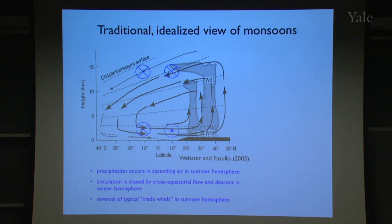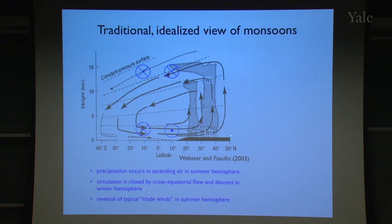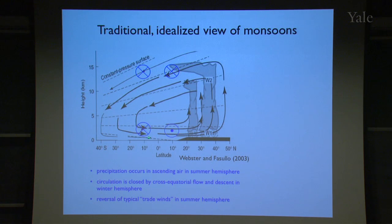That precipitation distribution is a result of highly three-dimensional circulations. But it works decently well to have a conceptual model and think of the circulation in two dimensions as a function of latitude and height. You have a continent in the summer hemisphere with a thermally direct circulation — warm air rising in the summer hemisphere, cold air sinking in the winter hemisphere. Because we're on a rotating planet, the winter hemisphere has trade winds blowing from east to west. Those trade winds are reversed to become the low-level monsoon westerlies in the summer hemisphere.